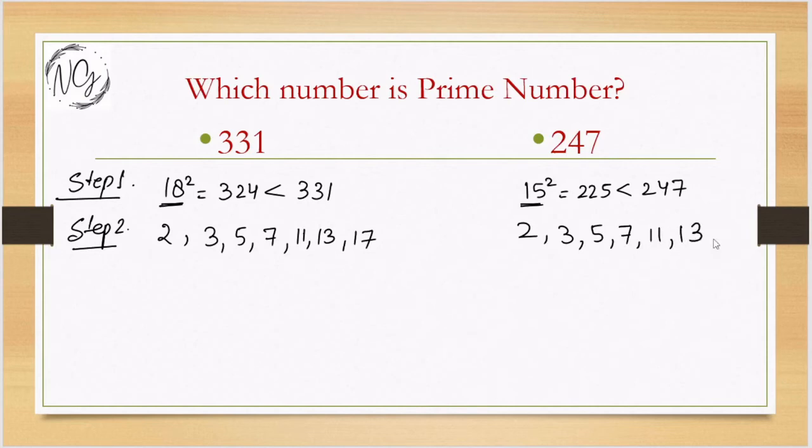Now third step: you have to check whether these numbers can divide this number or not. You will find that 2, 3, 5, 7, 11, 13, and 17 will not divide 331. So if no number can divide, then the given number is a prime number.